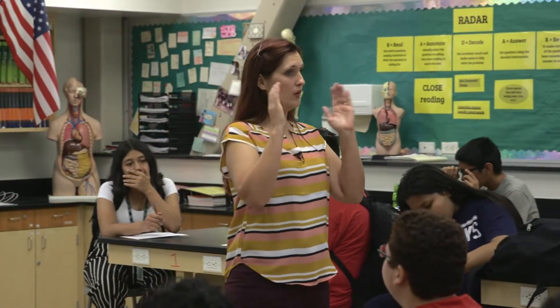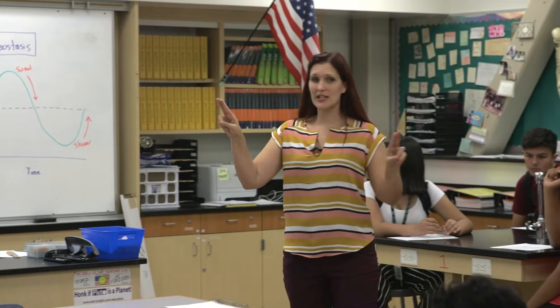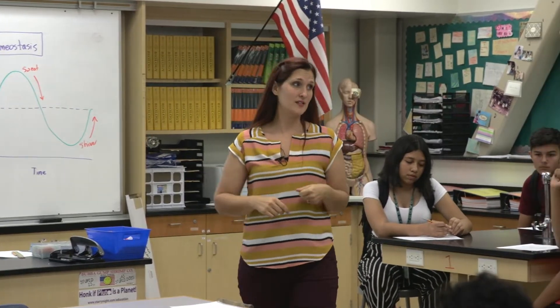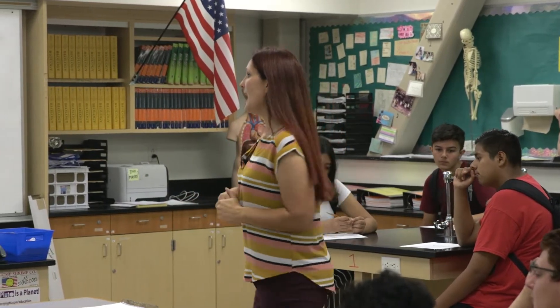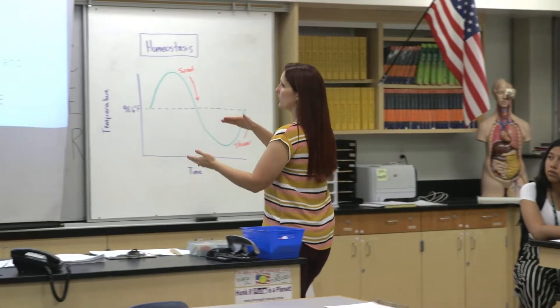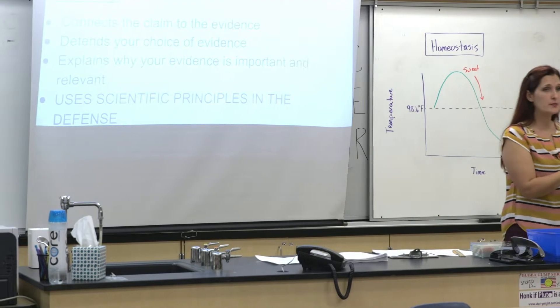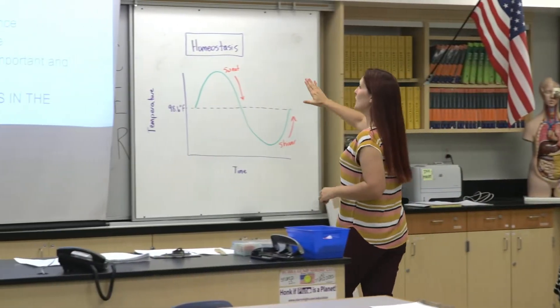If we're doing a lab, you might have a data table, so you need to explain in words what the table is showing us. The next piece is the reasoning — you're going to connect your claim and evidence together and defend it: why is this evidence good evidence to support my claim? This last piece is really important — use a scientific principle. The scientific principle I talked about today is homeostasis.